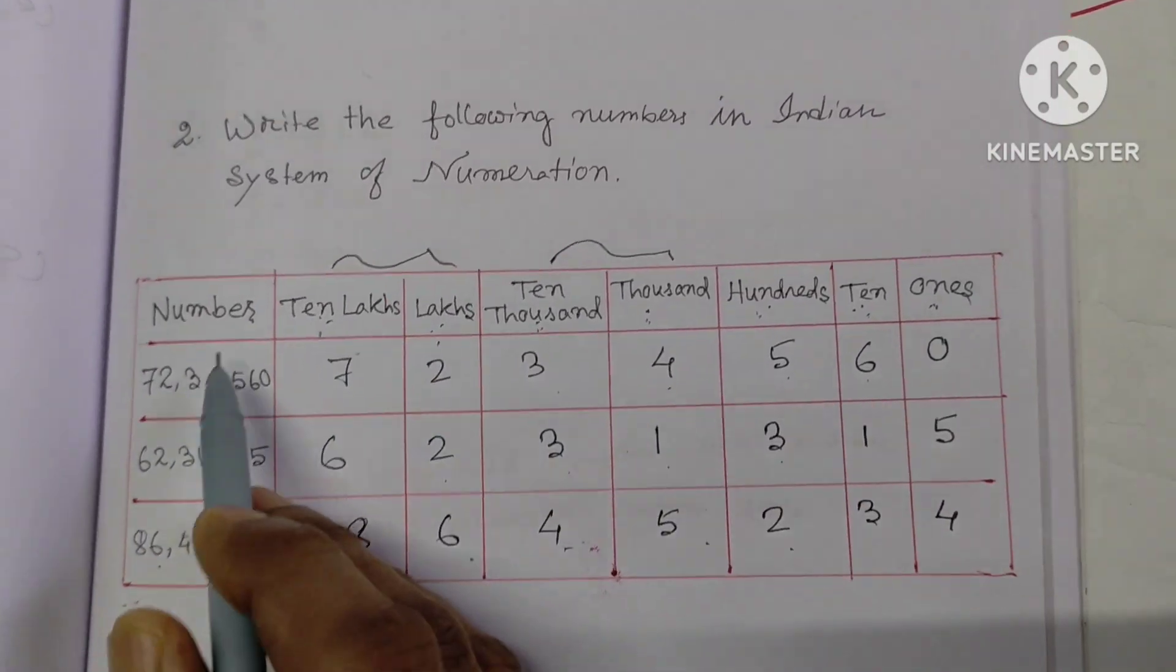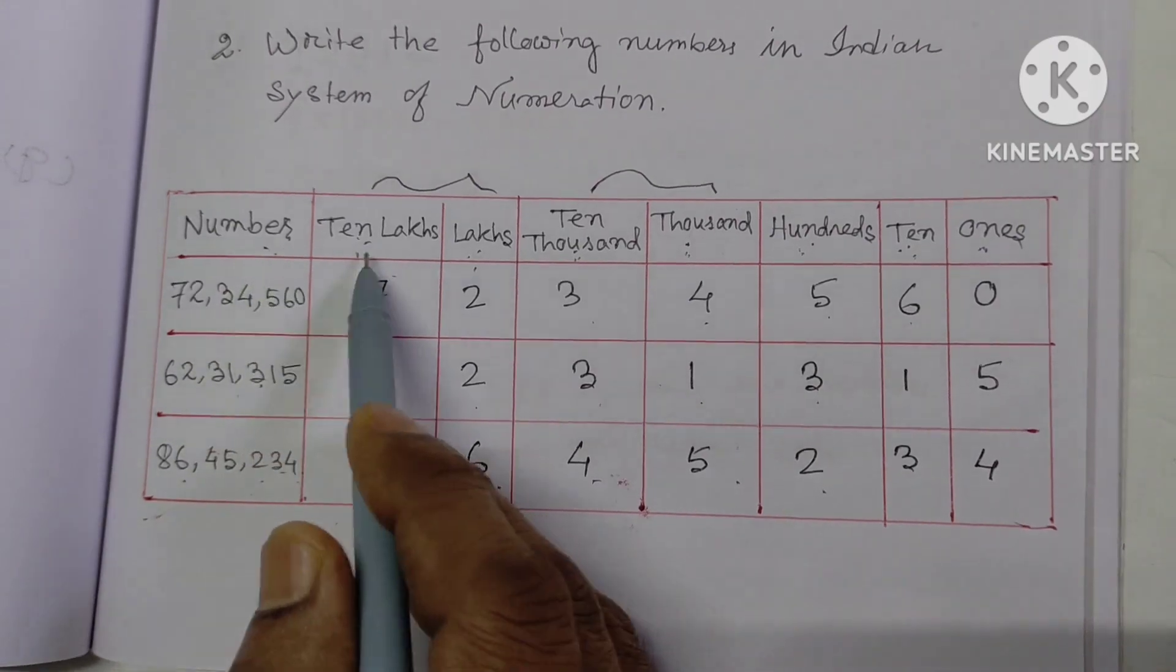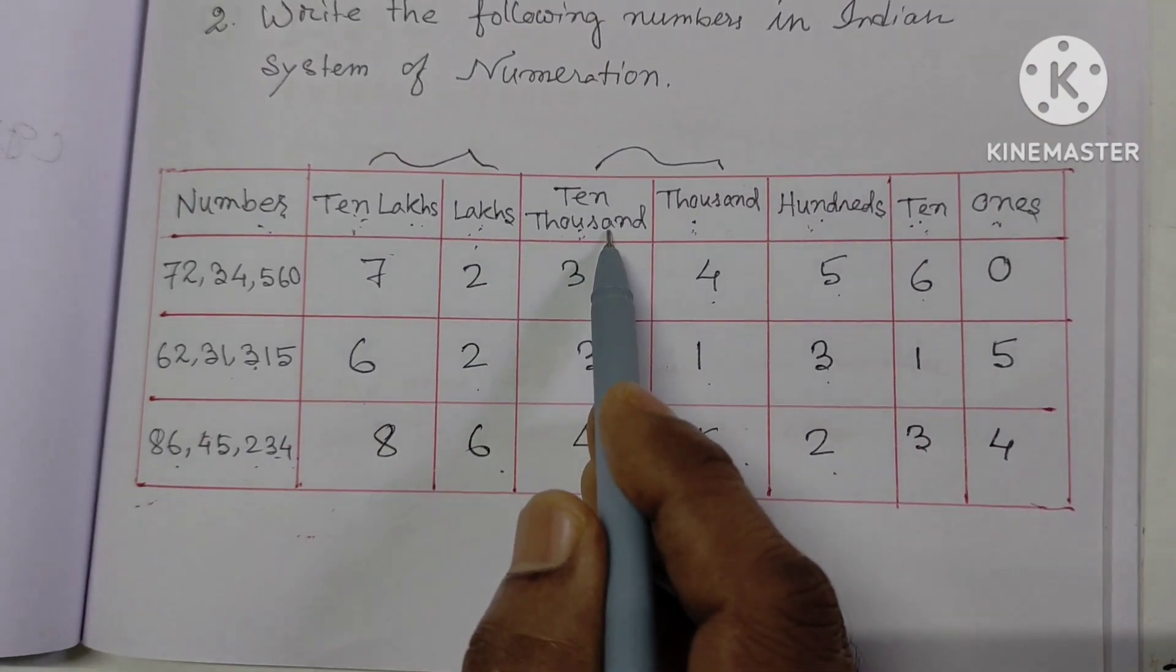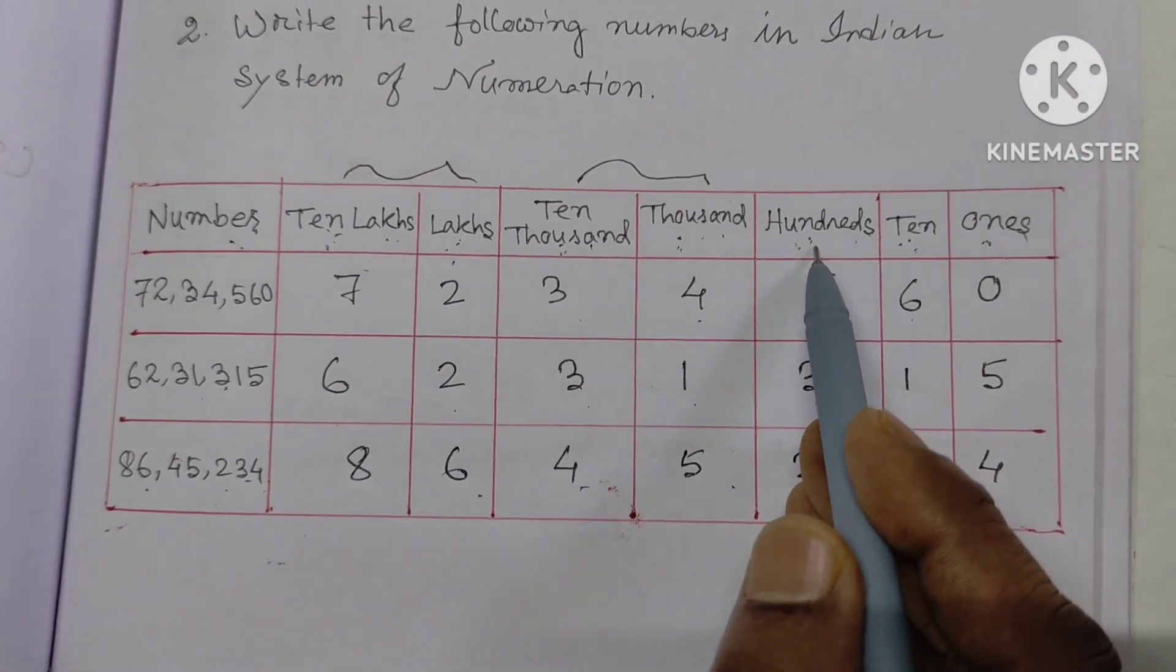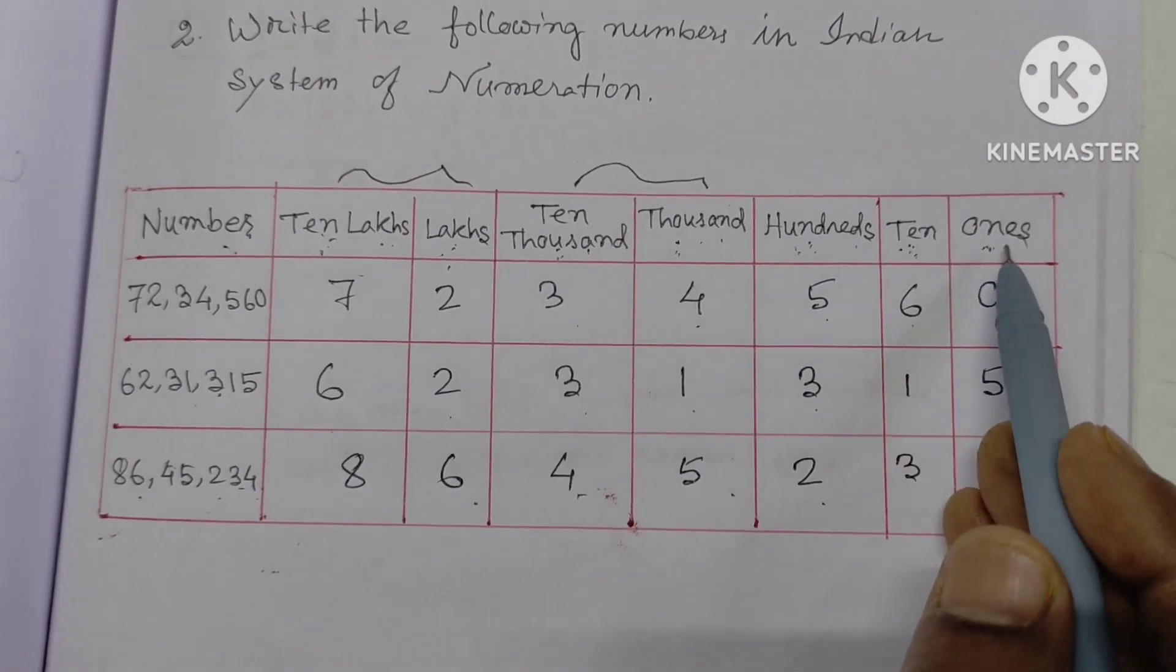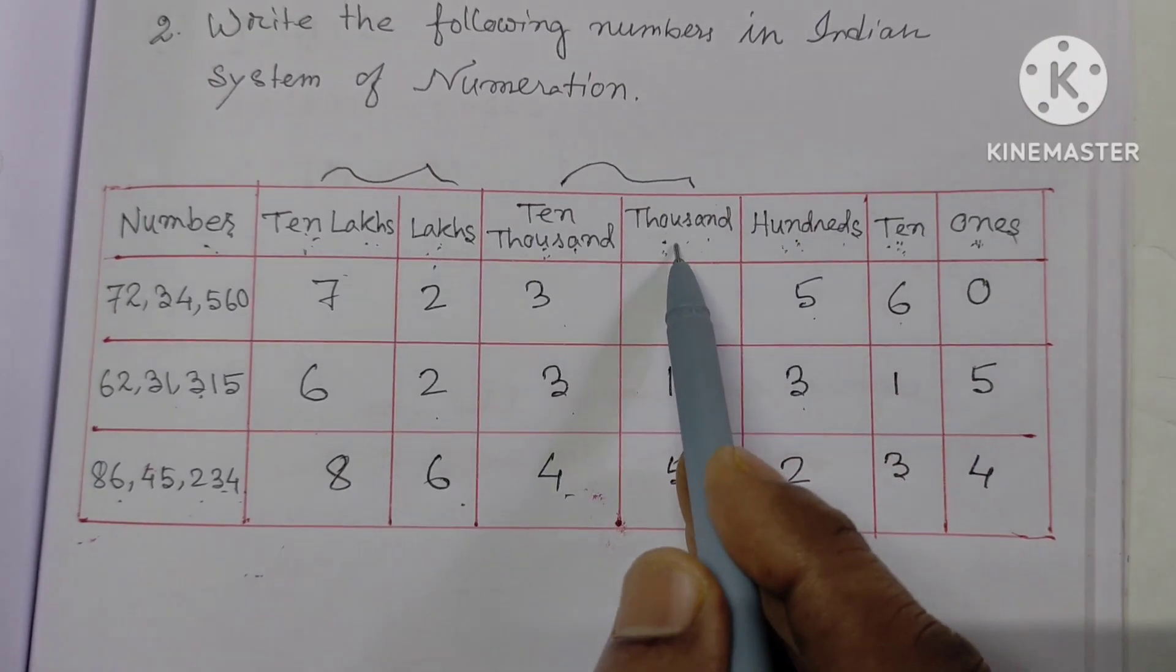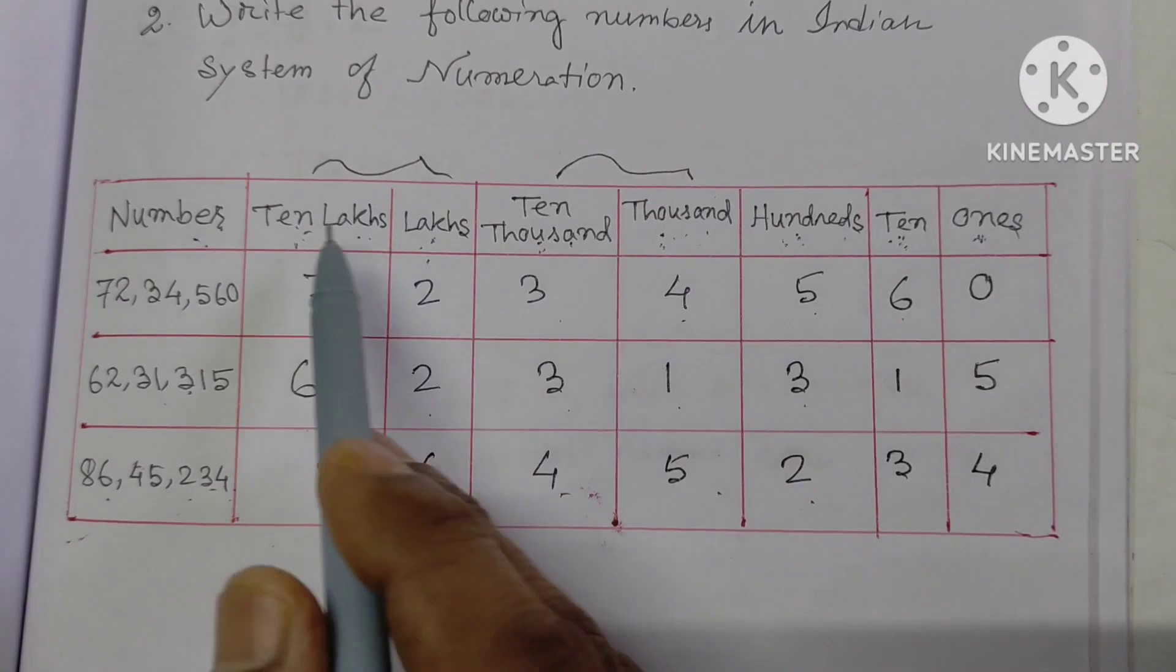This is ones place, tens place, hundreds place, thousands place, ten thousands place, lakhs place, ten lakhs place. The system shows: ones, tens, hundreds, thousands, ten thousands, lakhs, ten lakhs.